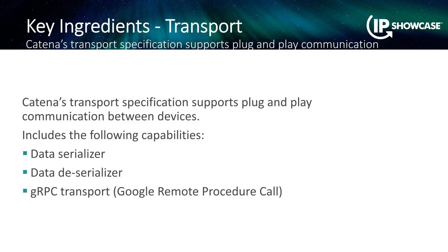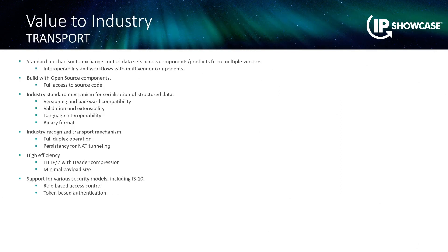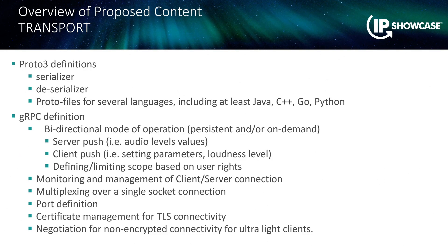On transport: once again we're trying not to reinvent the wheel. We really like gRPC — Google Remote Procedure Call — and so that is used for transporting Katina messages. We think it's very lightweight and very scalable. We looked at a lot of other methods of transport and really felt gRPC was the right way to go. We've also used protobufs so we can generate proto files in at least Java, C++, Go, and Python — starting out with C++ but adding the others as we move forward.